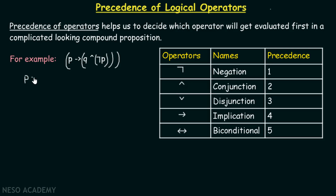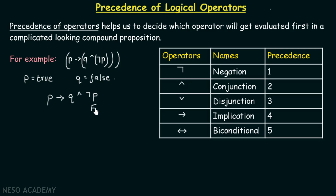Let's say P is true and q is false. What would be the truth value of this compound proposition? As P is true, not P becomes false. As q is false, false and false becomes false. As P is true and this whole compound proposition evaluates to false, true implies false is finally false.